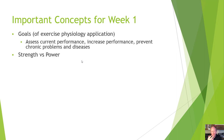First, understanding the concept of strength versus power. Your book refers to concepts of strength, power, or endurance — and everything is strength. Everything is the ability to produce force, which is what strength is. Maximum strength is the maximal capacity to produce force for a given muscle.